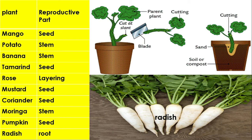Cutting method of propagation: A cut at a slant is made on the parent plant using a blade. The cutting part is then planted and grows into a new plant. Radish stores food in its root and has buds; from those buds it reproduces.